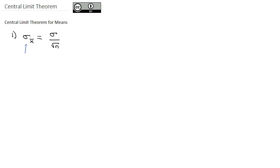Let's break this down. The sigma sub x-bar is what we're calling the standard error. The sigma in the numerator is the standard deviation of the population, and n — the number we're taking the square root of — is the sample size.